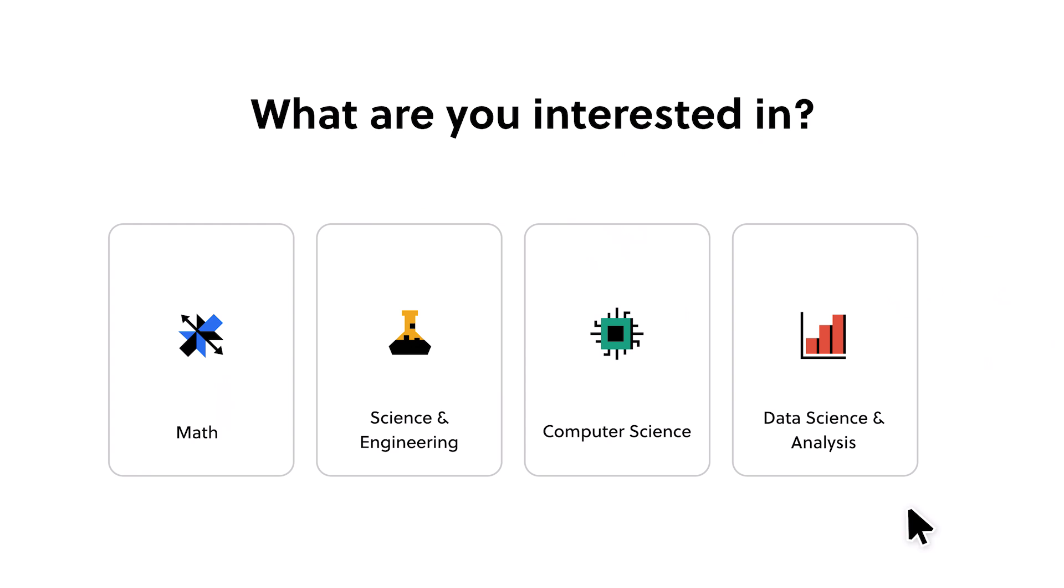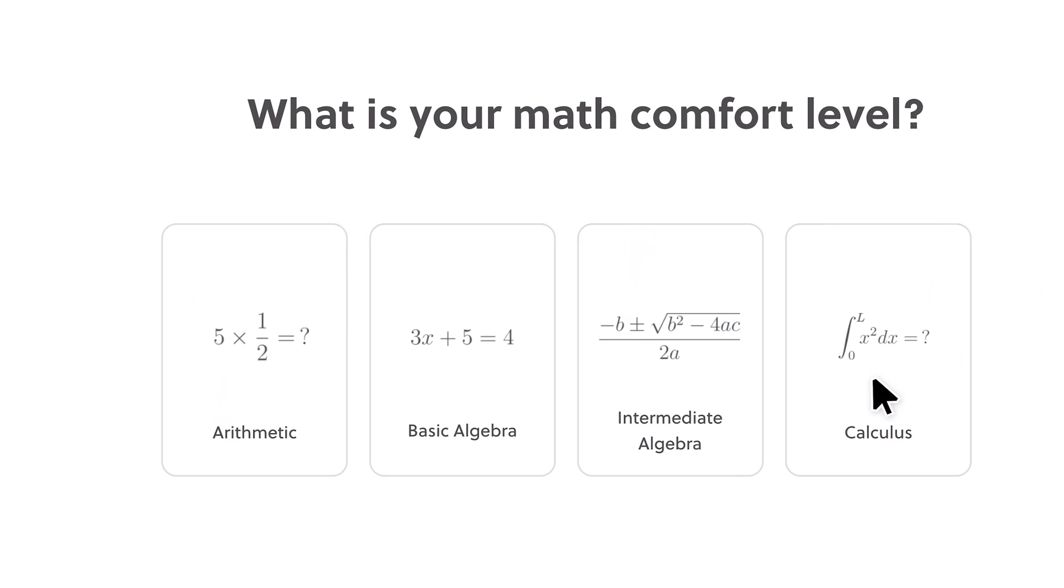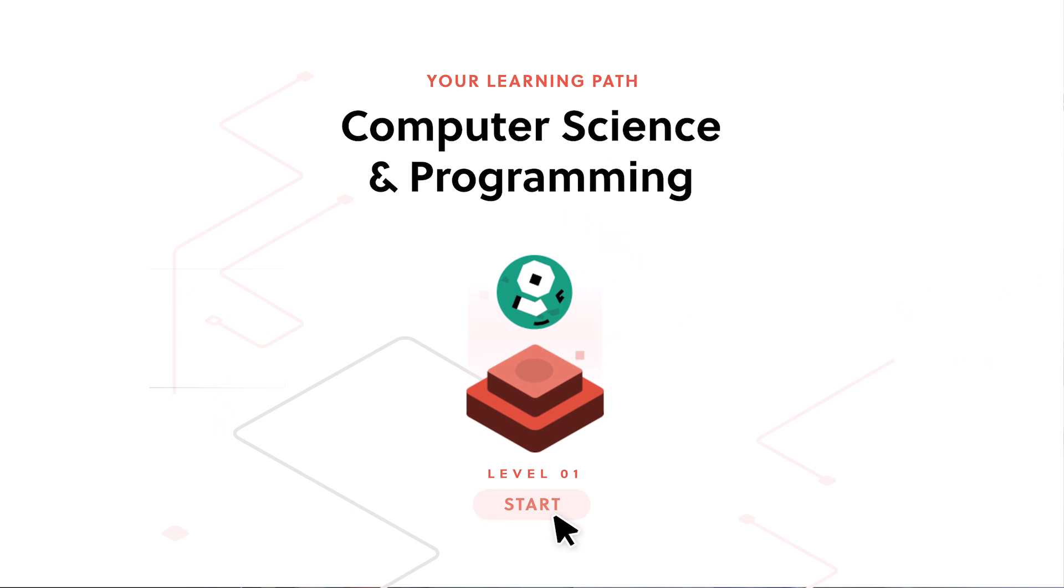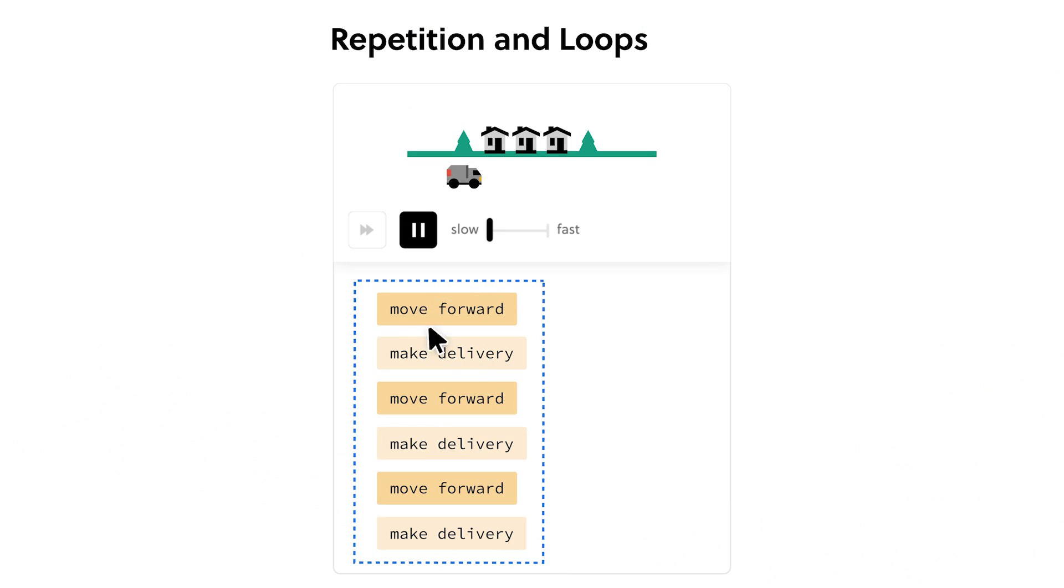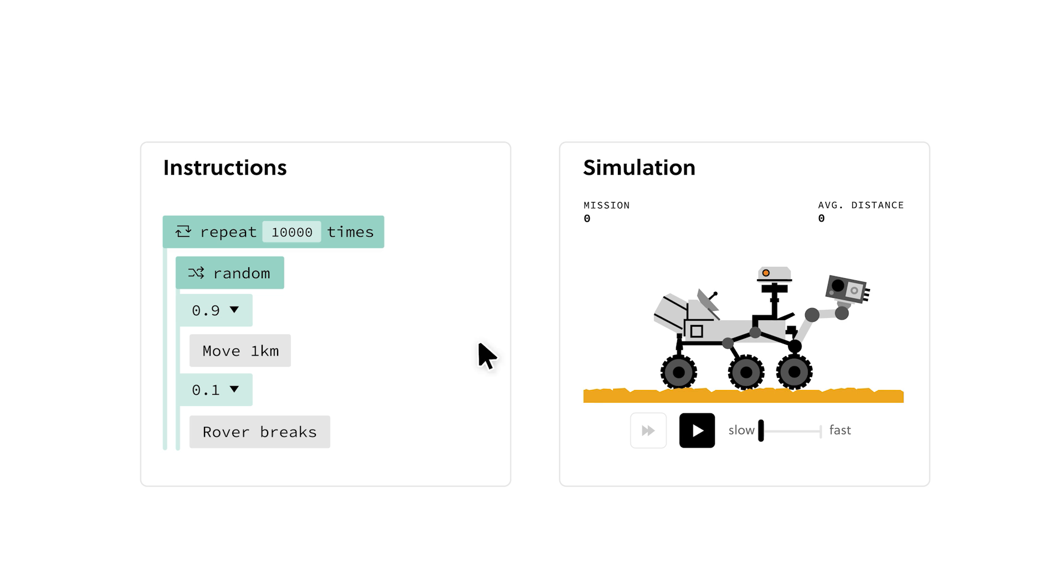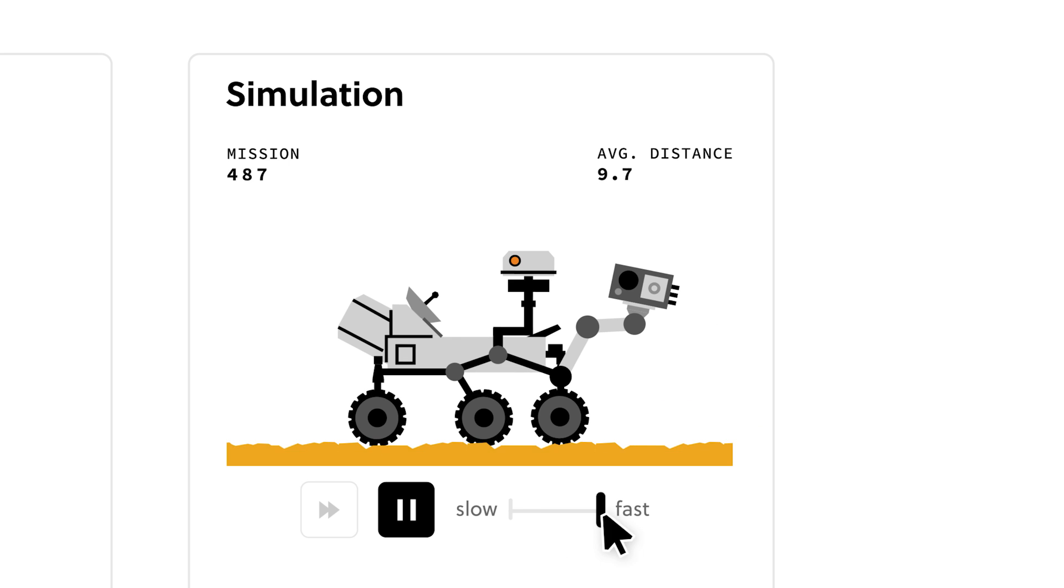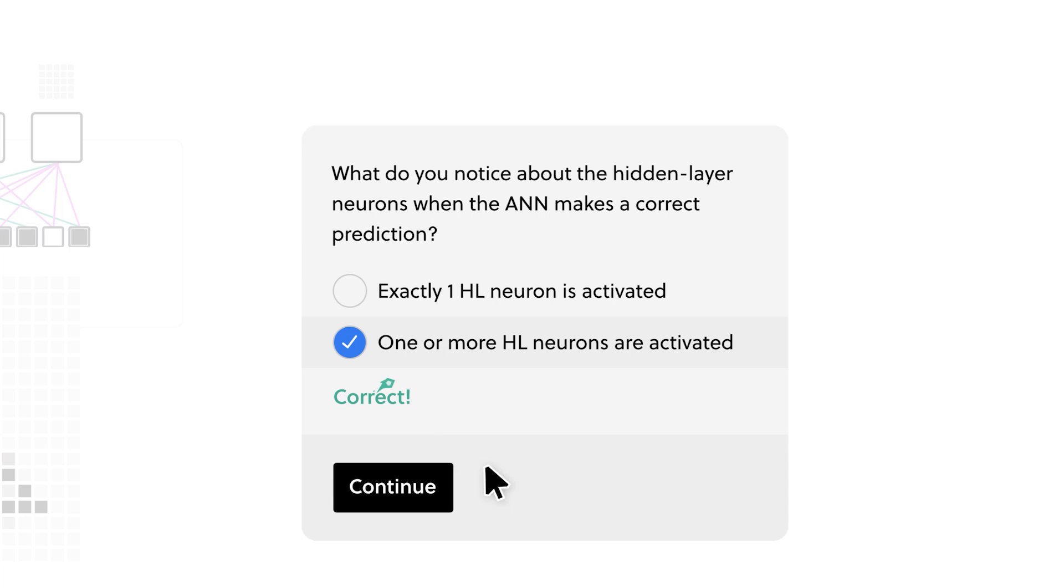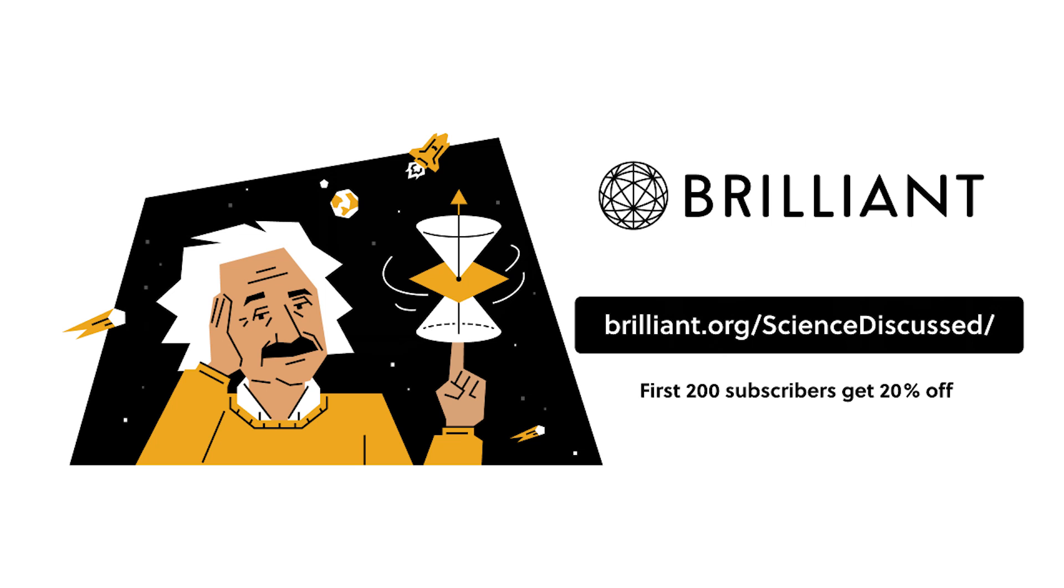Brilliant is an interactive online platform that makes learning easy. You can take different courses on brilliant, such as scientific thinking and learn from various different skill levels, including from zero knowledge. Interactive learning is important. It helps you to retain information and it also makes the experience more enjoyable. You can get started for free for 30 days and the first 200 people to sign up using the link brilliant.org slash science discussed will get a further 20% off.